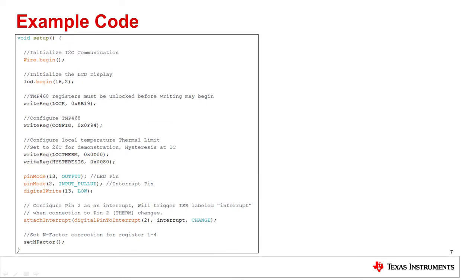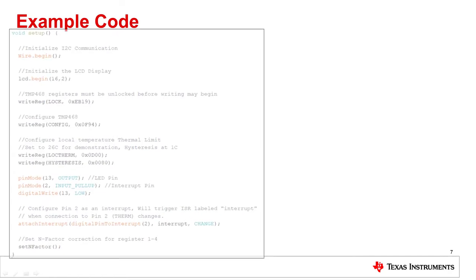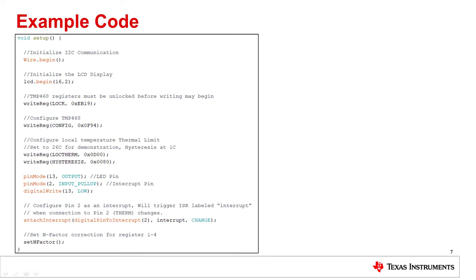Before we go through the demonstration, let's quickly step through the code that will be loaded onto the Arduino Uno. The two primary blocks for an Arduino sketch are the setup block, which contains the code to be executed once, and the loop block, which is executed continuously. Inside the setup block code shown on the left.